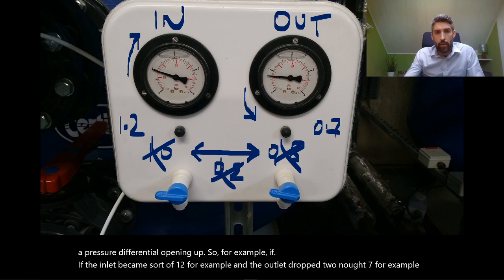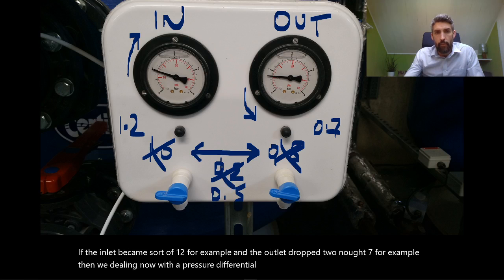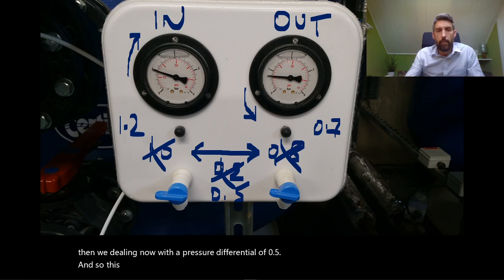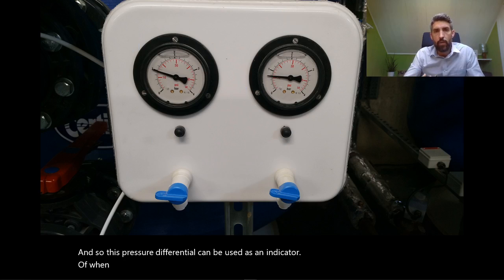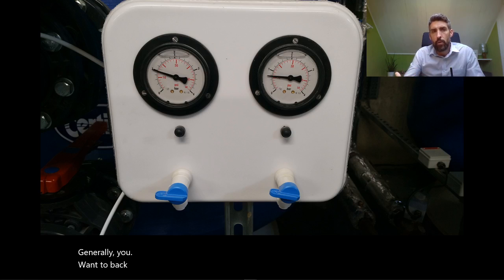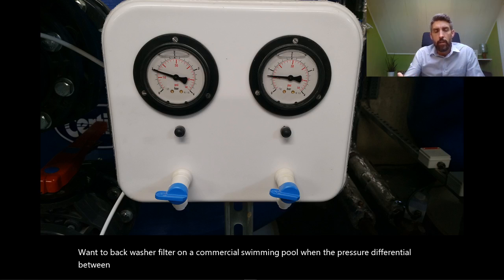This pressure differential can be used as an indicator of when the filter needs to be backwashed. Generally you want to backwash a filter on a commercial swimming pool when the pressure differential between the inlet and the outlet reaches something in the region of 0.4 or 0.5.